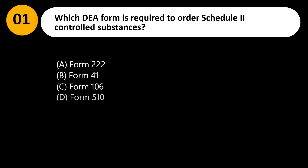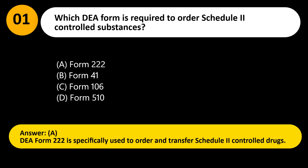Which DEA form is required to order Schedule II controlled substances? A. Form 222. B. Form 41. C. Form 106. D. Form 510. Answer: A. DEA Form 222 is specifically used to order and transfer Schedule II controlled drugs.